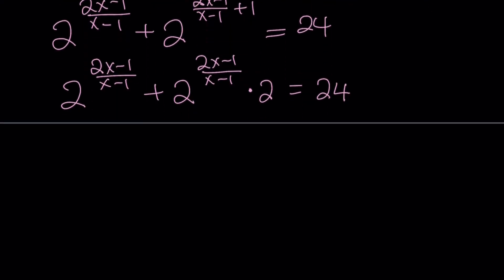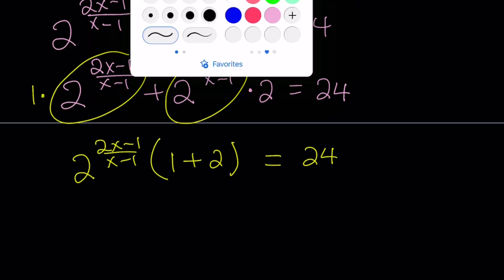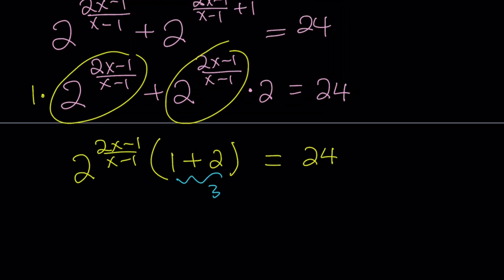Now, since we have a common factor at this point, we can take this out. So we have 2 to the power of 2x minus 1 over x minus 1. I know some people are thinking, I can add these because they're like terms. Yes, you can do that too. So if you take out the common factor, you get 1 plus 2. And the whole thing equals 24. We have a product, 1 plus 2 equals 3.